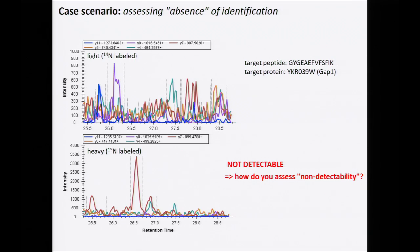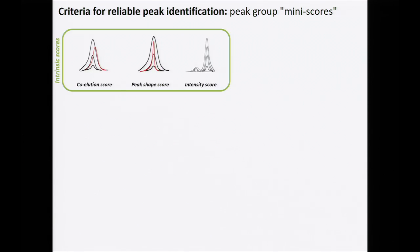Sometimes, unfortunately, even if you have light and heavy, the peptide assay you're trying to identify is actually absent in both channels. In that case, you can reject the hypothesis of the peptide's presence. But if you want to do this automatically, the question is how do you assess non-detectability of peptides? This is very subjective. For this purpose, we developed a set of scores, originally developed for SRM datasets, and as you will see, we expanded this type of analysis to DIA targeted peptide-centric chromatogram approaches for peptide identification.